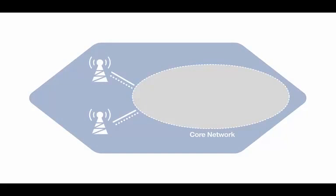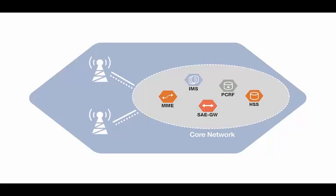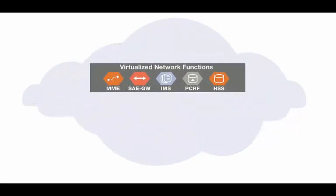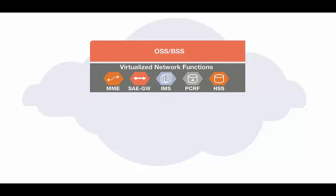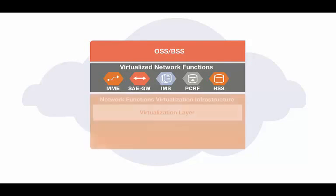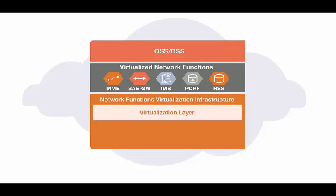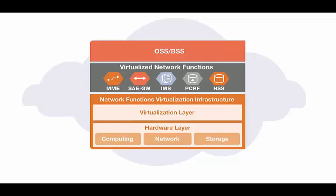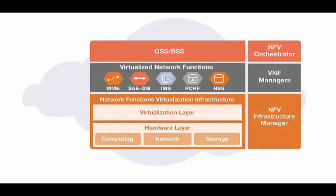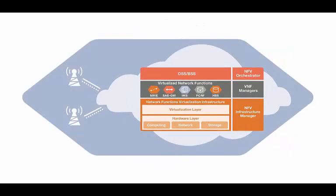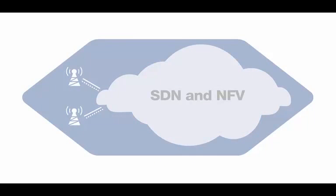A typical mobile infrastructure is composed of access points and a core network. Currently, this core network is built with specialized hardware elements. In 5G, these elements will be virtualized and implemented in a network cloud. The operation and business support applications will also be transferred to the cloud using network function virtualization. NFV will use general-purpose hardware to provide networking, computing and storage. SDN will also be used along with NFV to increase network end-to-end transport efficiency.